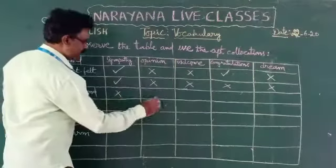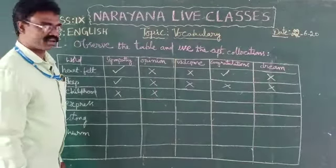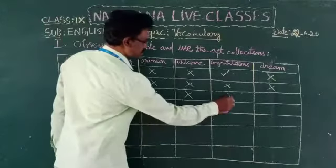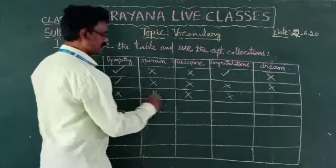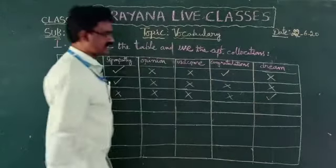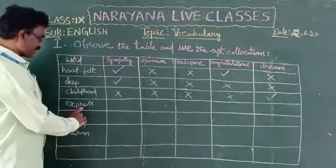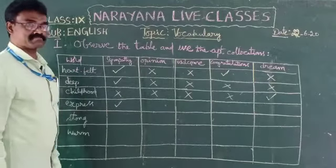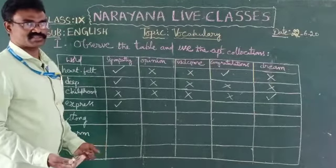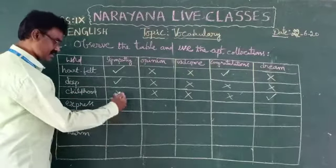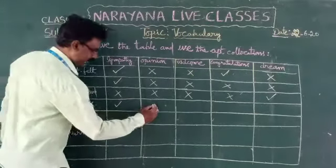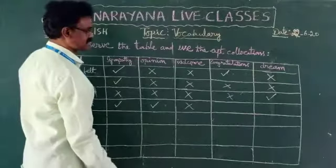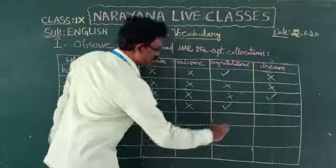Childhood opinion — not accepted. Childhood welcome — wrong. Childhood congratulations — wrong. Childhood dream — this is the right collocation. Now 'express': express sympathy — generally we express sympathy for regrettable occasions, so express sympathy is a right collocation. Express opinion — right collocation. Express welcome — no. Express congratulations — right collocation.